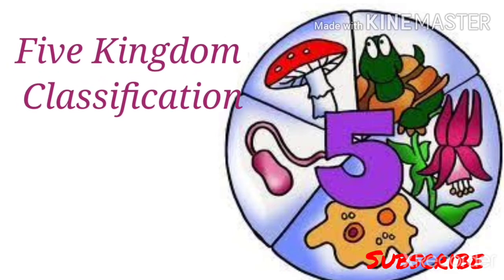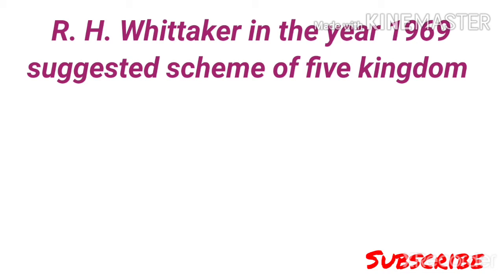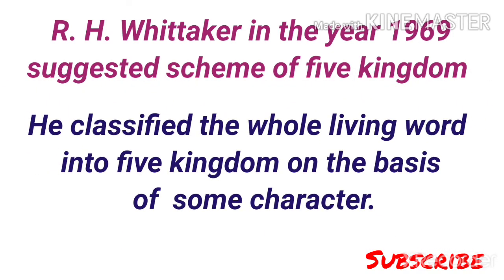Five kingdom classification was given by R.H. Whittaker in the year 1969. He suggested a scheme of five kingdom classification based on certain characteristics, and classified all living organisms into five kingdoms.